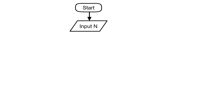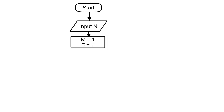As usual, we'll have our start first, and then after the start we proceed by inputting the value. We are finding the factorial of a number. After that, the next step is to set m as one and set f as one. These are the values we'll be making use of during our calculation process.